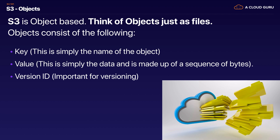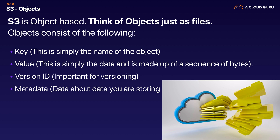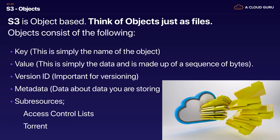We also have metadata, which simply means data about data — for example, noting that this object belongs to the finance department or is a payroll spreadsheet. Objects also have sub-resources, including access control lists and torrents. We are going to cover off access control lists and bucket policies coming up.